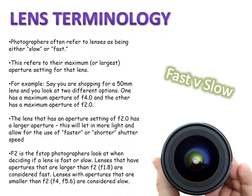Here's some more lens terminology: fast versus slow. Photographers often refer to lenses as either fast or slow, and this refers to their maximum or largest aperture setting. Say you're shopping for a 50mm lens and you look at two options — one has a maximum aperture of f4, which is a large aperture, and the other has a maximum aperture of f2. We know from past lectures that f2 is a bigger opening than f4, so the f2 lens lets in more light and allows for faster or shorter shutter speeds. The f4 lens would technically be considered slower than the f2 lens.